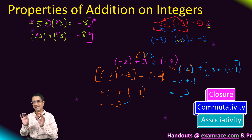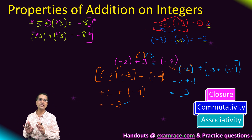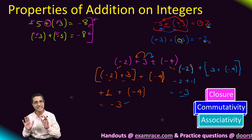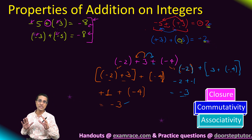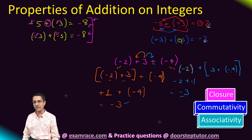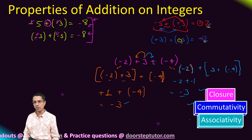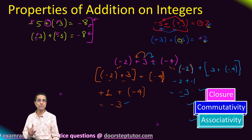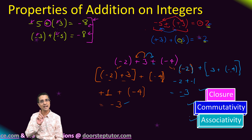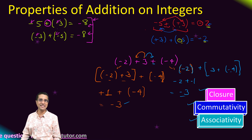Whether I associate the middle operand with the first plus sign or with the second plus sign, my answer remains the same. This means that addition of integers is indeed associative as well. So the three properties that were true for addition of whole numbers — closure, commutativity, and associativity — are also true for the addition of integers.